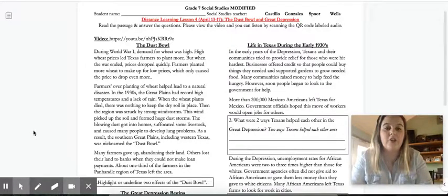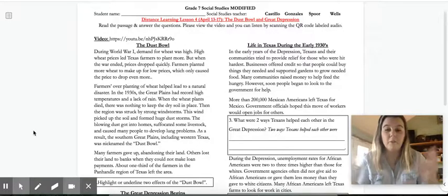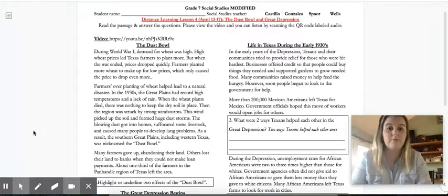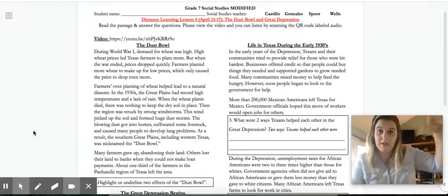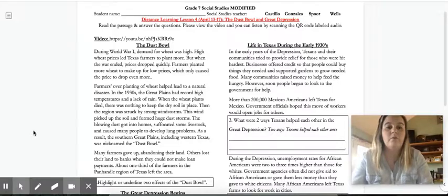The blowing dust got into homes, suffocated some livestock, and caused many people to develop lung problems. They were breathing in all of this dirt and it was getting stuck in their lungs. As a result, the southern Great Plains, including western Texas, so up in our panhandle, was nicknamed the Dust Bowl.